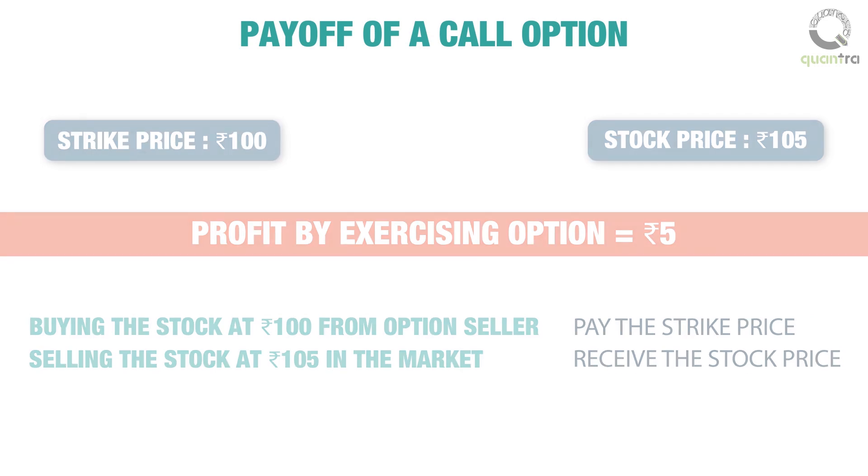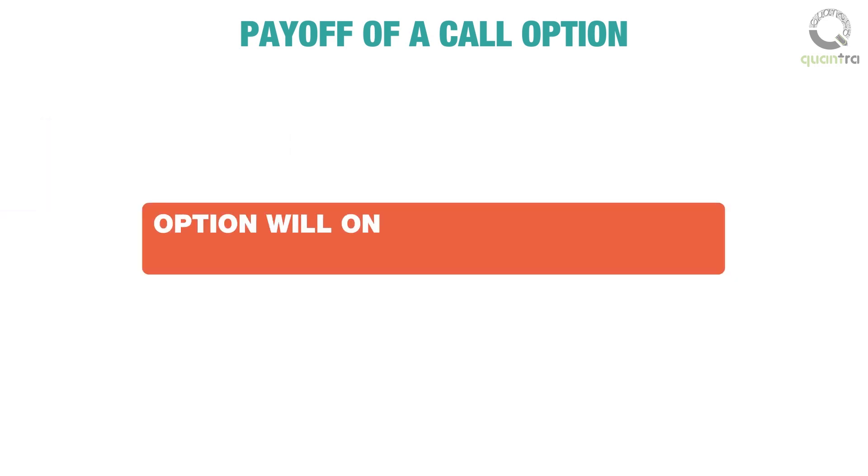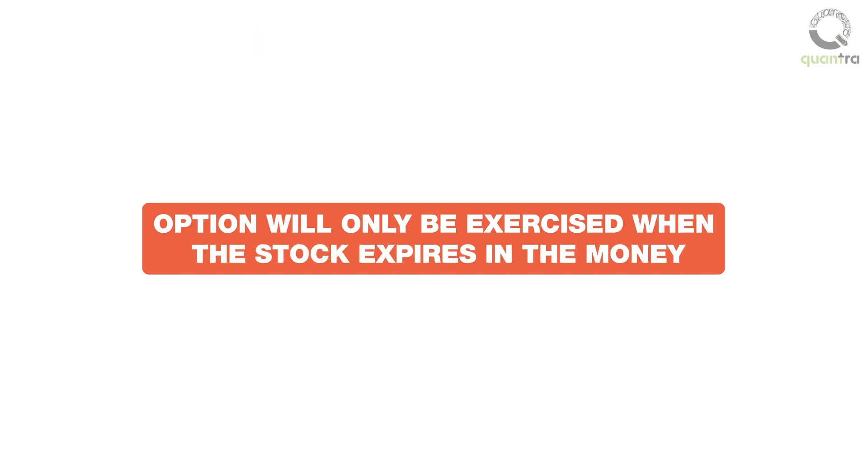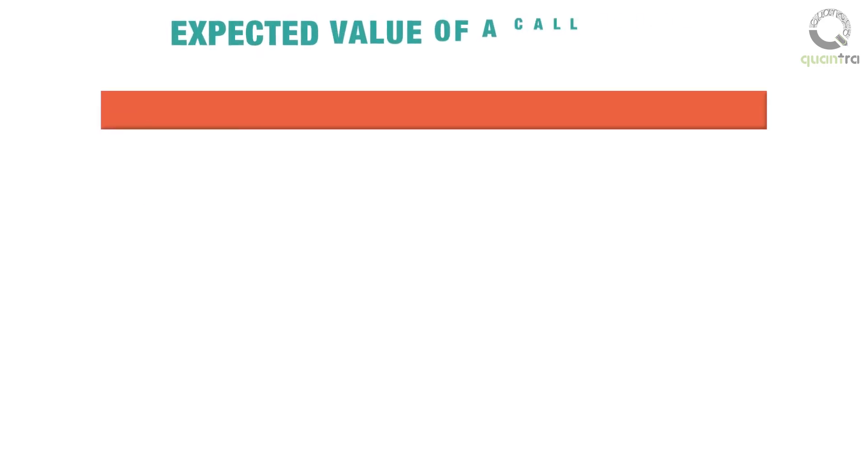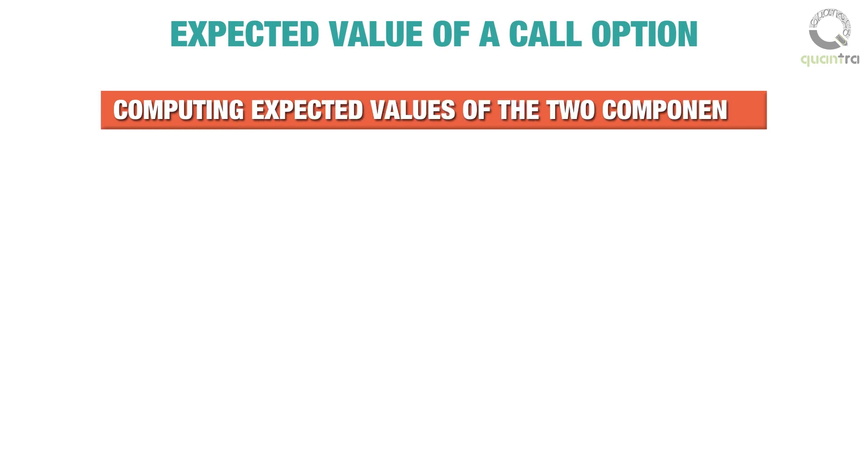Next, we need to understand that the option will only be exercised when the stock expires in the money. We will now compute the expected values of the two components.